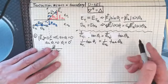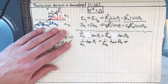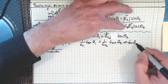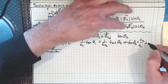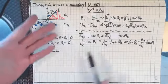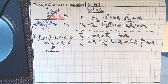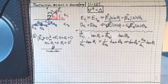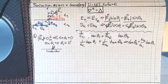This tells me that the tangent of theta two is going to equal epsilon r2 divided by epsilon r1 times the tangent of theta one. Note that when I'm talking about epsilon here, I'm just talking about the relative permittivity, because epsilon sub zero would cancel out of the division.